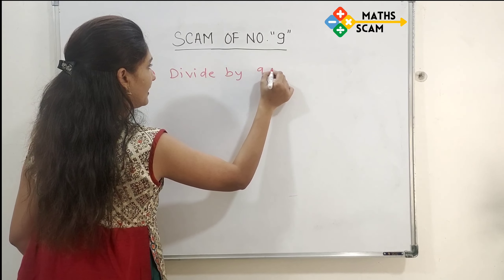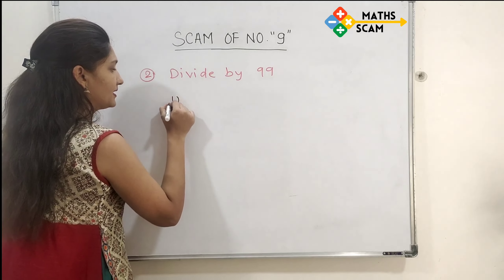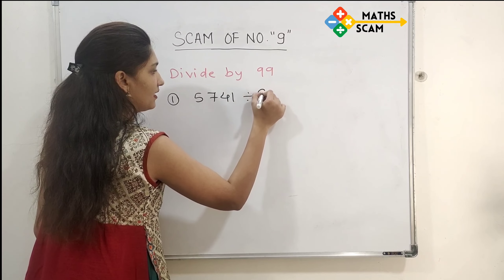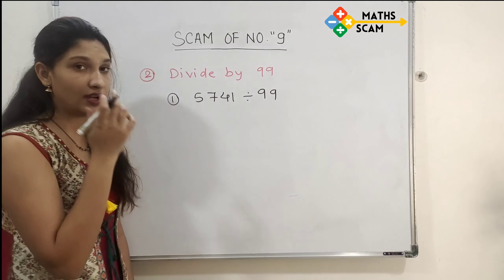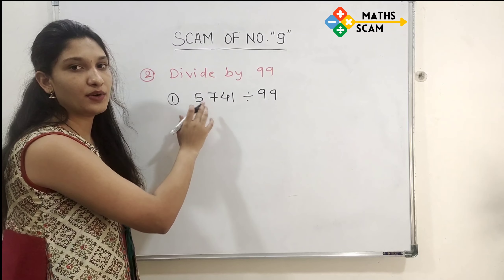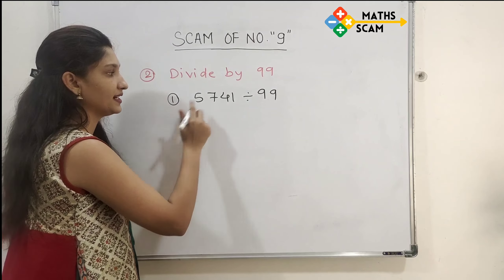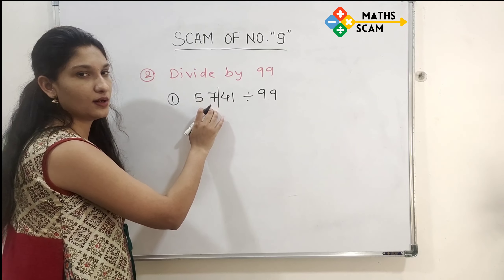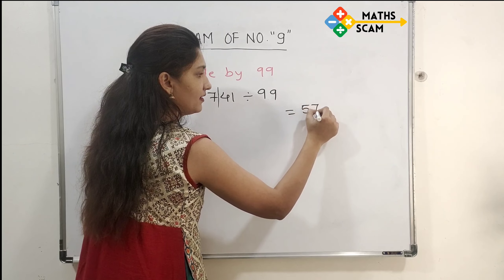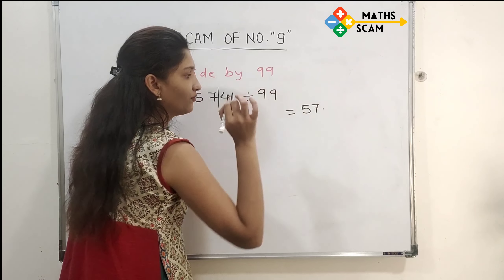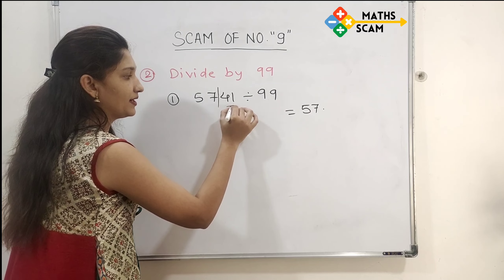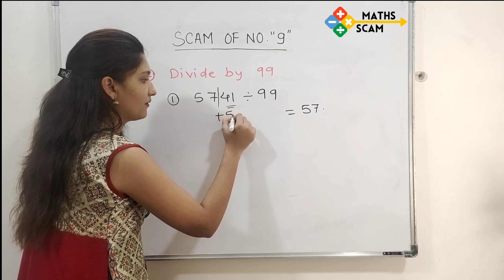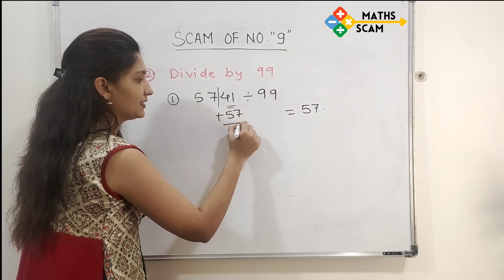The second part is dividing by 99. The first example is 5741 divided by 99. Divide this 4-digit number into 2 parts: 57 and 41. Write the first part, 57, as it is, and add a decimal point in front of it. Then take the second part, 41.